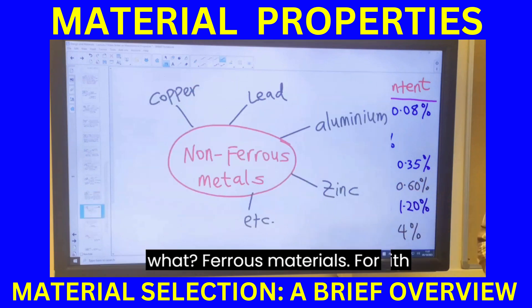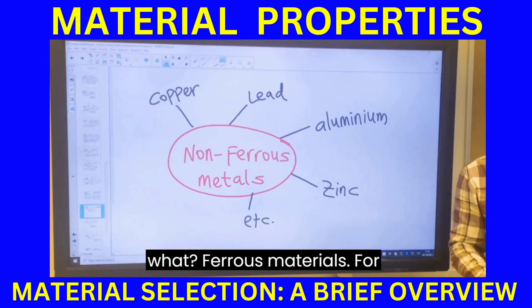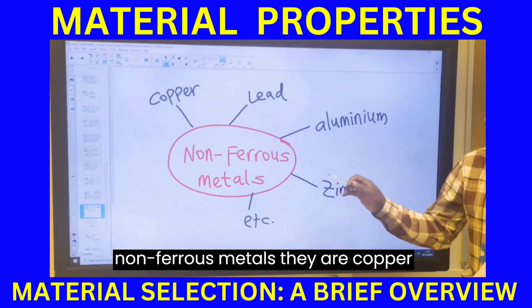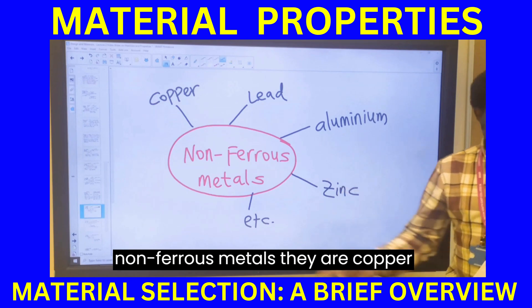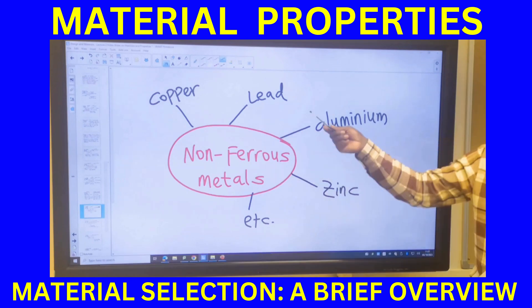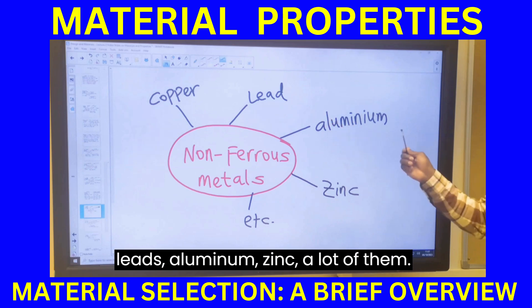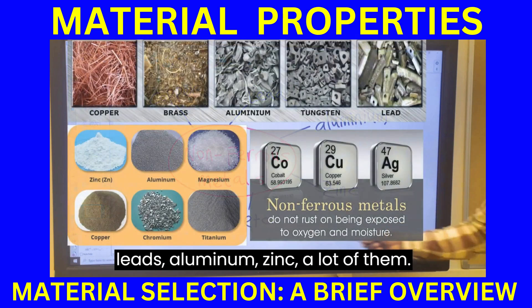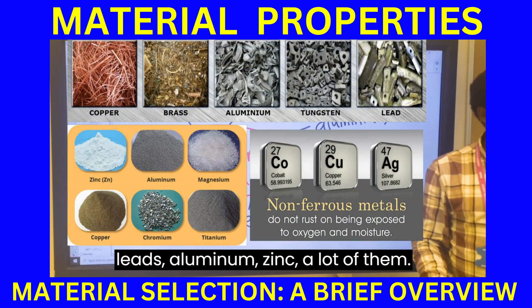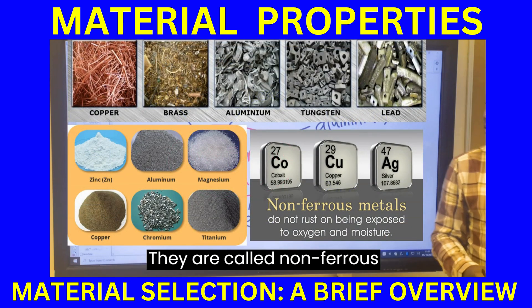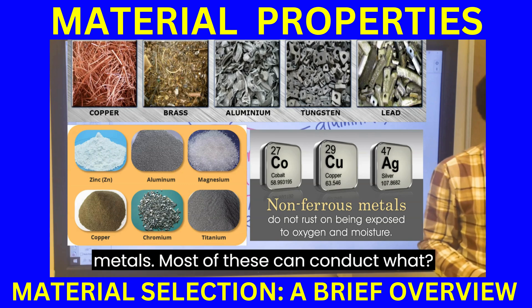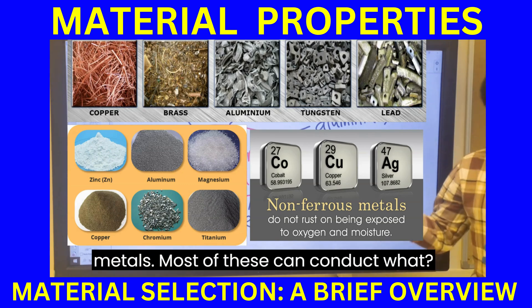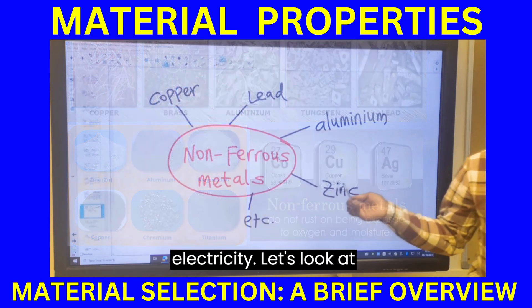For non-ferrous metals, examples include copper, lead, aluminium, and zinc. They are called non-ferrous metals because they contain no iron. Most of these can conduct electricity.